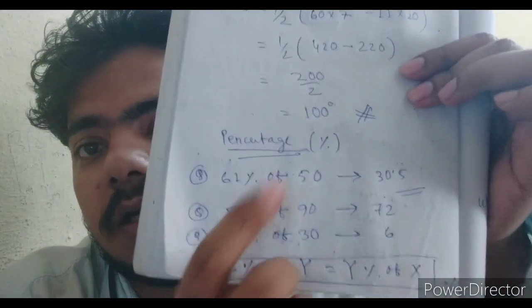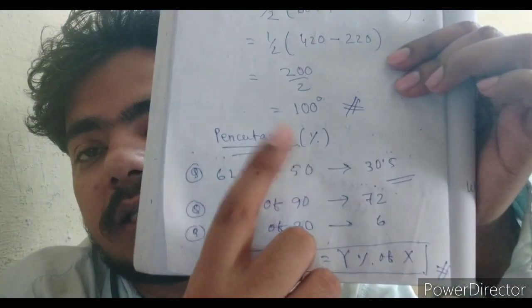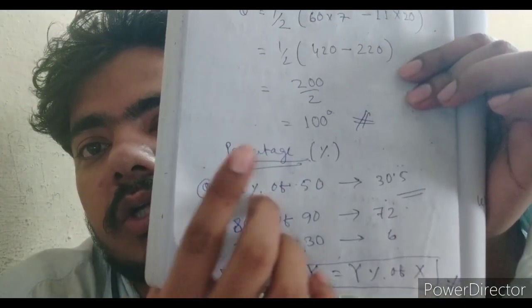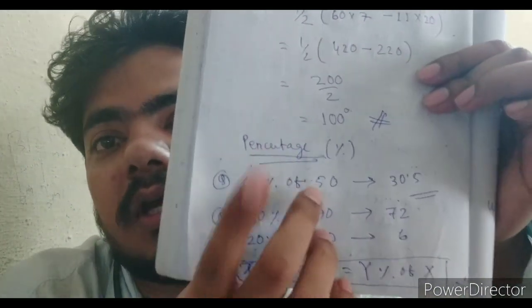You can verify by putting any different time and finding the angle to check if it is correct. This type of question is really important and is asked everywhere. This year in UPSC prelims also they asked a clock-related problem, so many people who take it lightly are missing out.